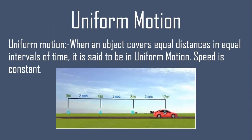Now, types of motion. There are two types of motion: one is uniform motion, one is non-uniform motion. Uniform motion kya hota hai? When an object covers equal distance in equal interval of time, it is said to be in uniform motion — that means speed is constant.